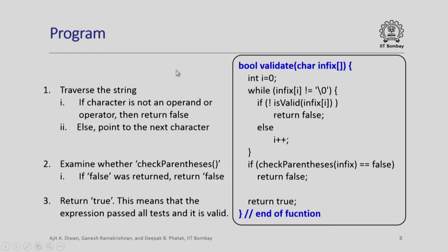Next is the validate function. Its input is the entire infix string. We traverse the string and if any character is not a valid operand or operator we return false, else move to the next character. While the string has not ended, we call is_valid for the ith element of the infix string. If it is not valid, return false. Finally, it calls check_parenthesis on the infix string. If that is false, return false. If the parentheses match and all characters are valid, this function returns true.